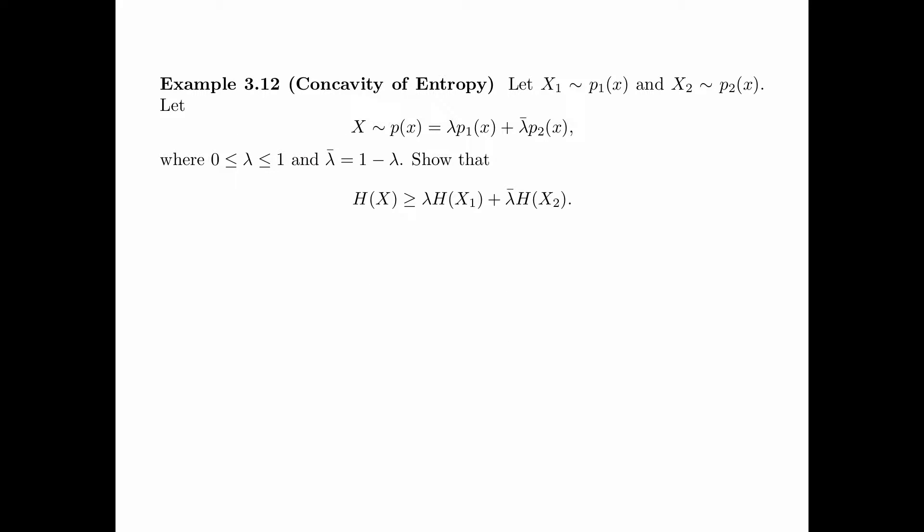In example 3.12, we are going to show the convexity of the entropy function. Let x1 have distribution p1(x) and x2 have distribution p2(x). We define a new random variable x with distribution p(x) = λ·p1(x) + λ̄·p2(x), where λ is between 0 and 1 and λ̄ = 1 − λ. That is, p(x) is a mixture of p1(x) and p2(x). We are going to show that H(x) ≥ λ·H(x1) + λ̄·H(x2).